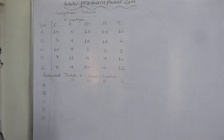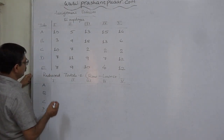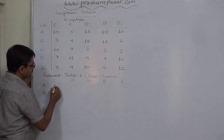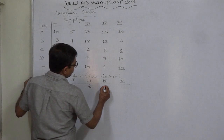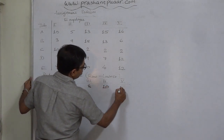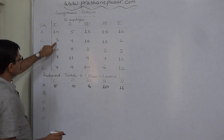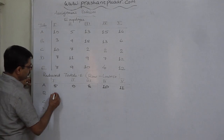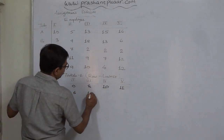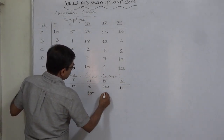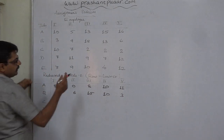In row A, the lowest value is 5, so subtract 5 from all values: 10−5=5, 9−5=0, 13−5=8, 15−5=10, 16−5=11. In second row B, the lowest value is 3; subtract 3 from all: 3−3=0, 9−3=6, 18−3=15, 13−3=10, 6−3=3.